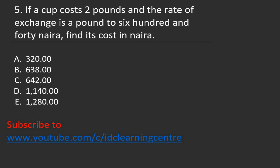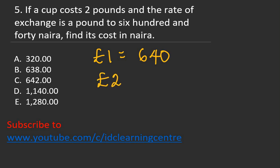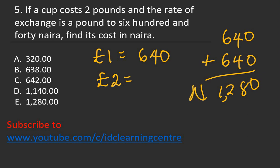Question 5: If a cup costs 2 pounds and the rate of exchange is 1 pound = 640 Naira, how much will it cost? If 1 pound costs 640 Naira, then 2 pounds will be 640 plus 640, which gives 1,280 Naira. The right answer is E.